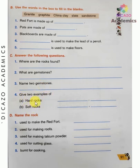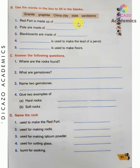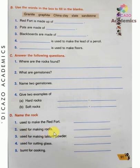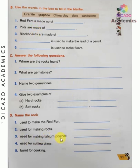Give two examples of hard rock: granite and marble. Soft rocks: graphite and sandstone. Name the rock used to make the Red Fort: sandstone. Which rock is used to make roofs: granite. What is used to make talcum powder: talc. What is used for cutting glass: diamond. What is burnt for cooking: coal.